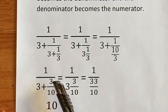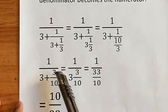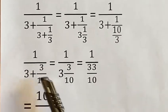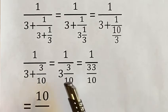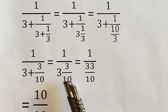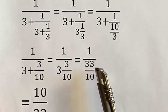Then we have the other part of 3 plus 3 tenths over 1. So here we add the 3 and 3 tenths, making it 3 and 3 tenths. And then we make this an improper fraction. So here we make it 33 over 10.